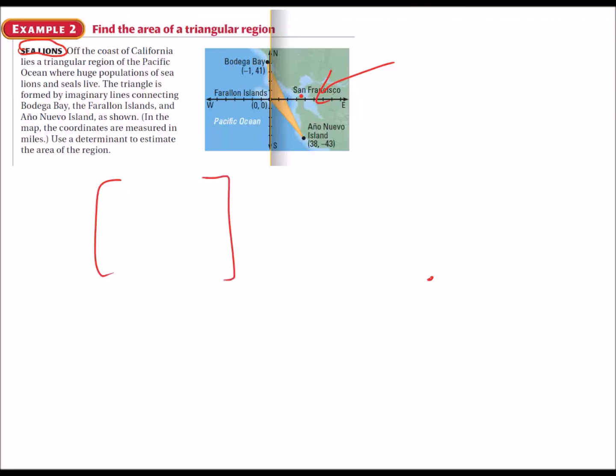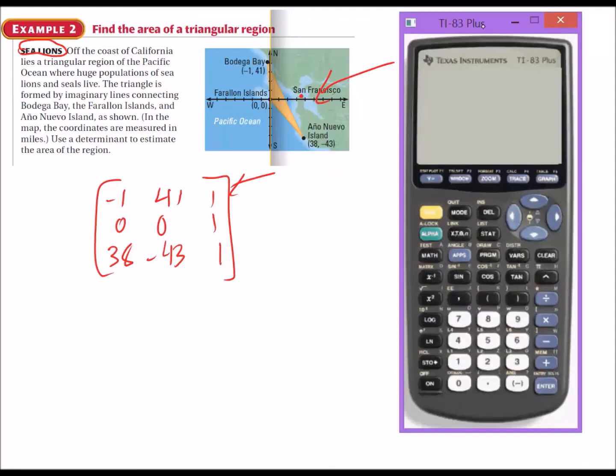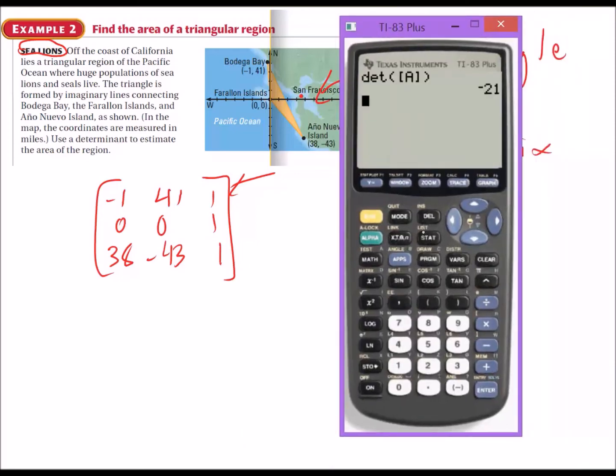When you're finding the area of a triangle, you need a 3x3 matrix. Set it up as follows: [-1, 41, 1; 0, 0, 1; 38, -43, 1]. That one is just a placeholder.